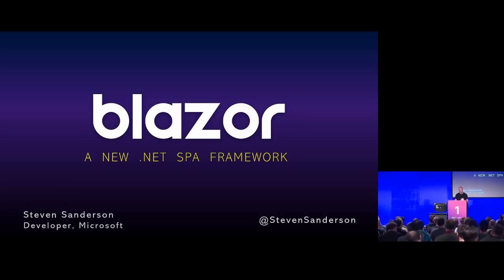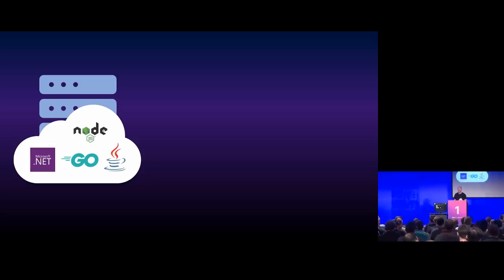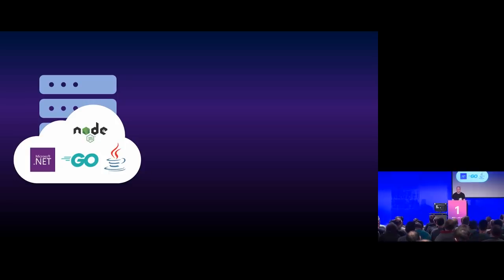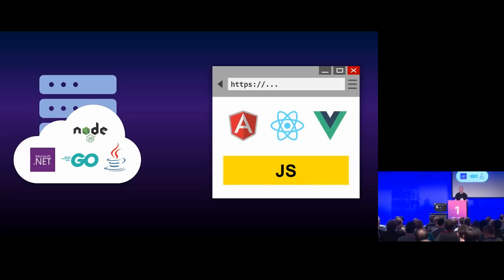To set that context, let's think about how web development works today. You're going to have some code running on a server somewhere — might be in .NET, Java, Node, Go, or something else. But you don't just want to write something on a server; you want to make some UI appear in someone's web browser. Today, you'd probably use one of these single-page application frameworks — Angular, React, Vue — and it's going to be running on the JavaScript runtime.